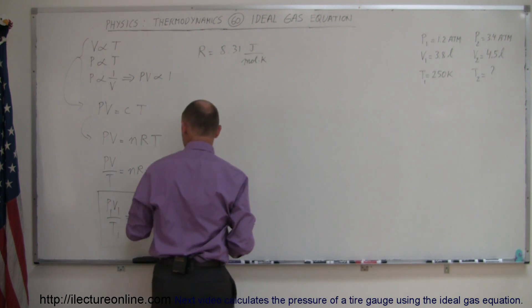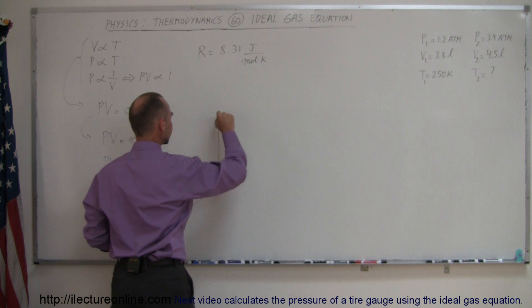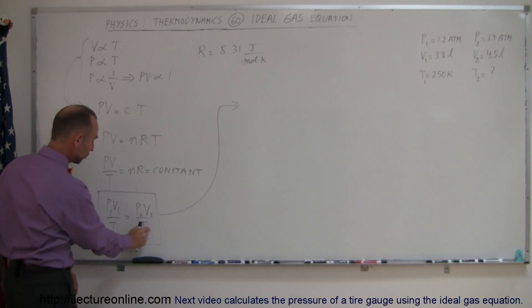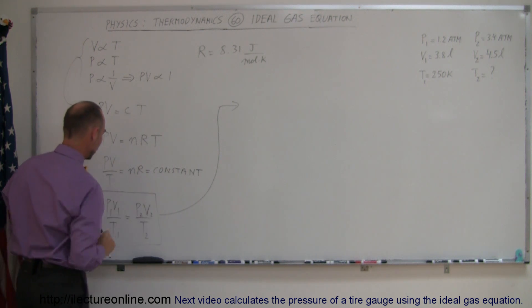So we'll go ahead and use this equation right here. What we need to do is solve this equation for T2. So we're going to move T2 over here, P1V1 down here, and T1 over here.